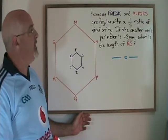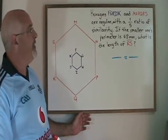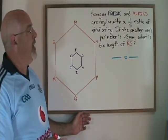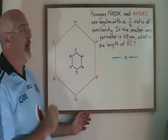They have a ratio of similarity of 1 to 5, and the smaller one's perimeter is 48 millimeters. What is the length of side RS? That's this side right here.